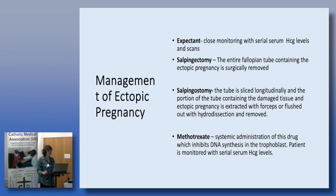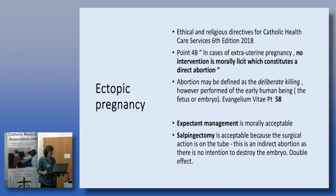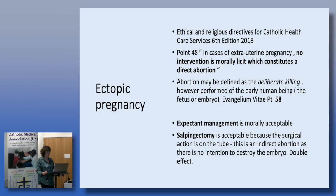Looking at ectopic pregnancy ethically, the Ethical and Religious Directive for Catholic Healthcare Services (2018), point 48, states that no intervention is morally licit which constitutes a direct abortion — defined in Evangelium Vitae 0.58 as the deliberate killing of the early human being. Expectant management is morally acceptable because we allow nature to take its course. Salpingectomy is also morally acceptable because the surgical action is on the tube and not directly on the fetus — the baby's death is an indirect consequence, covered by the principle of double effect.